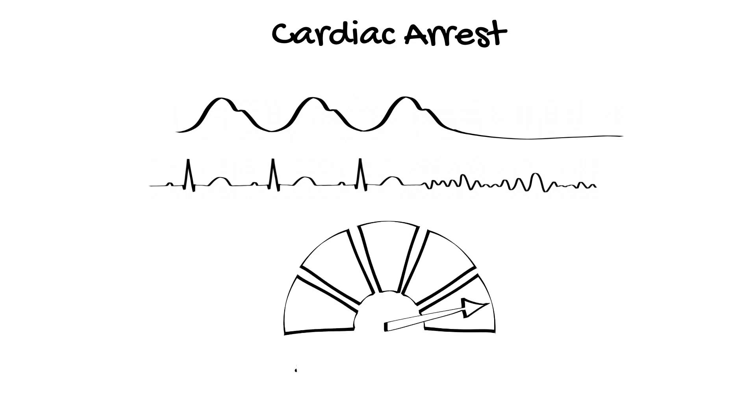Instead, attempt to increase the VA ECMO flow to provide support whilst trying to restore a perfusing rhythm. The reason restoring a perfusing rhythm is important is that stagnant blood in the left ventricle may clot.